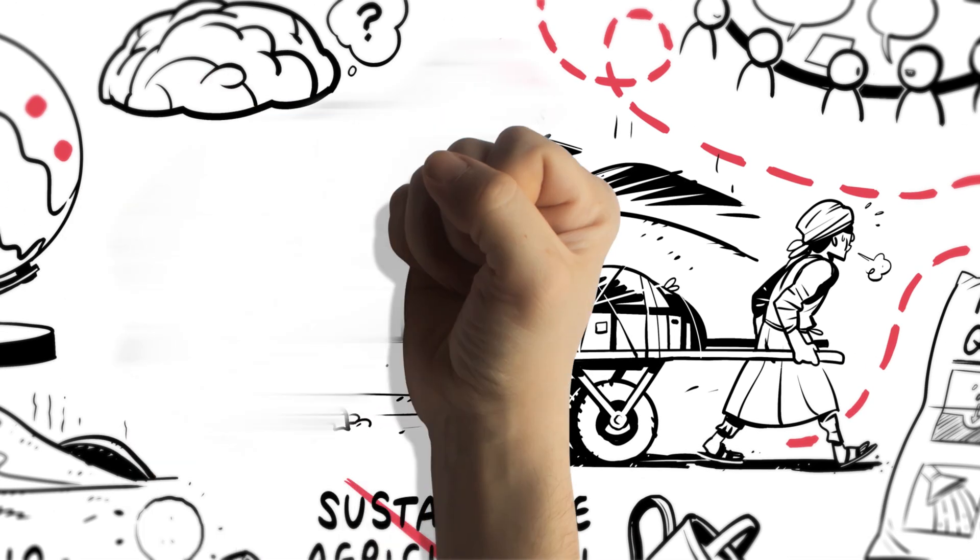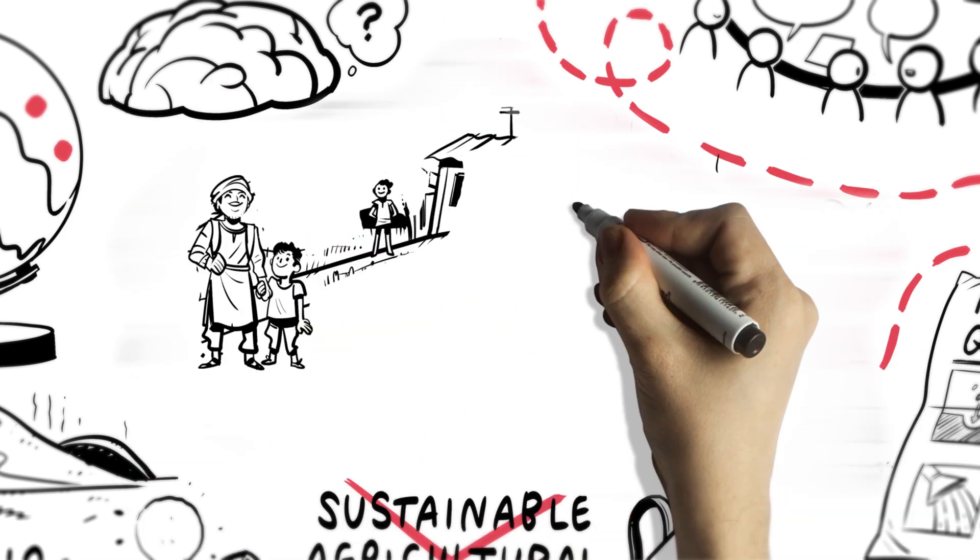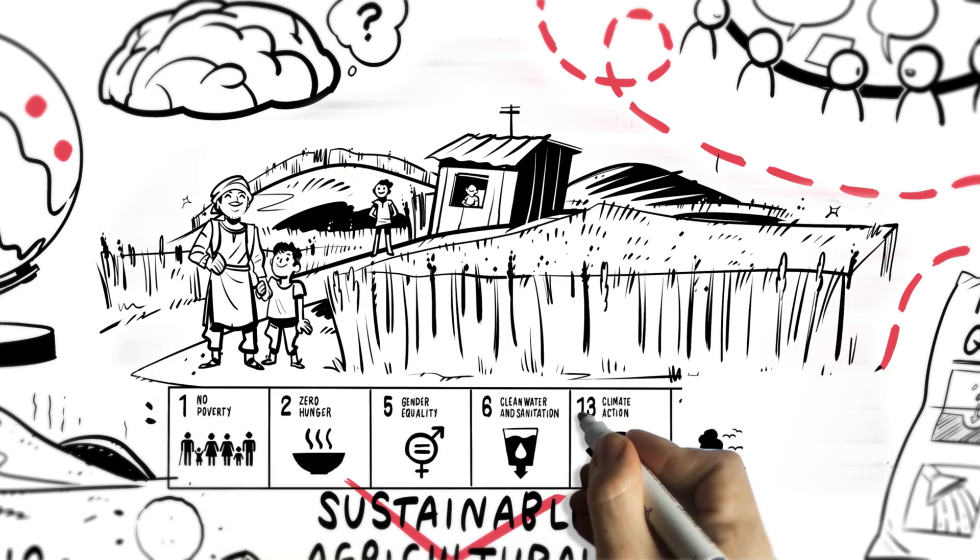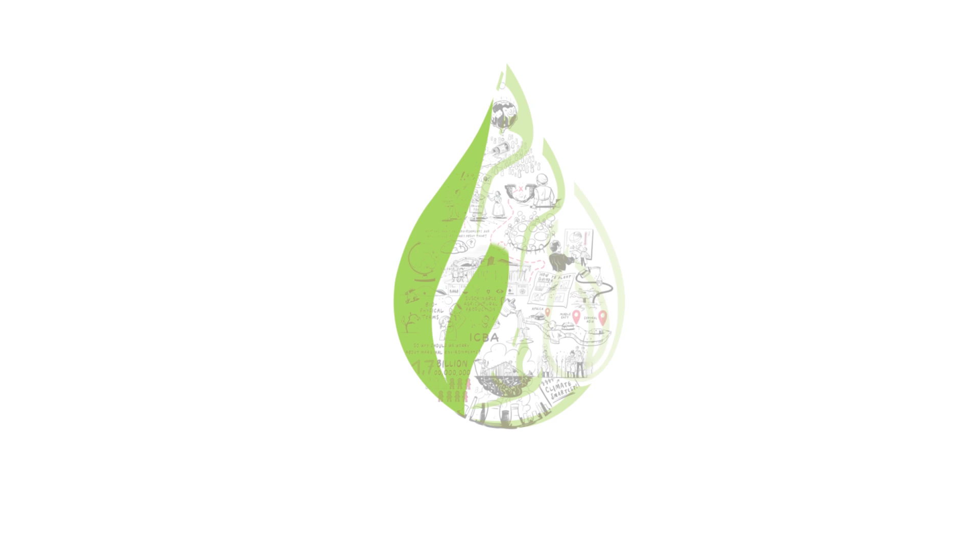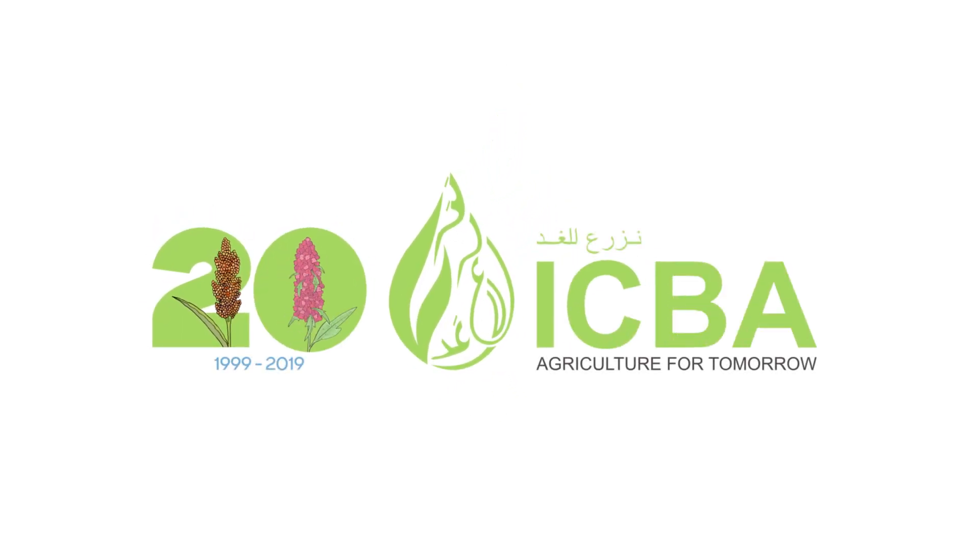All this work feeds into our vision of sustainable livelihoods, jobs, and food security for all people who live in marginal environments. If we want to meet the ambitious targets of sustainable development goals and make sure that nobody is left behind, we must help these communities produce more with less, earn more, and sustain their livelihoods.